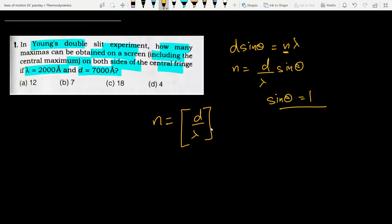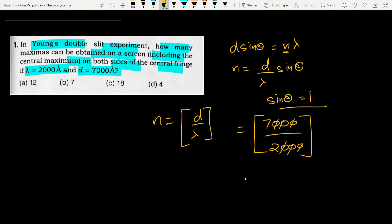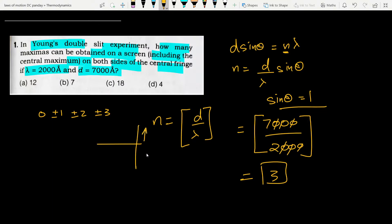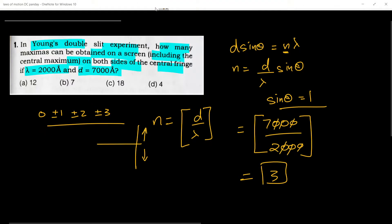Correspondingly maxima occur at n = ±1, ±2, ±3, and n = 0 (central). So counting: n = 0, ±1, ±2, ±3 gives us 1 + 2 + 2 + 2 = 7 maximas total. So option B is the correct answer.